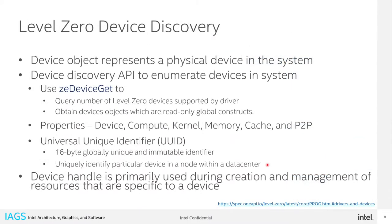Device discovery works with an interface called ZDeviceGet. After that, you get a device handle that you can use for anything you want to do with that device. That includes querying for the properties of the device: compute capabilities, kernel capabilities, what type of memory is supported, cache configuration, peer-to-peer capabilities. You can have a universal unique identifier to know what device you are using, even if you have swapped it out of the system before.